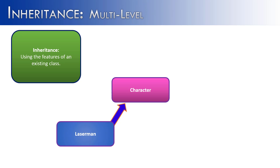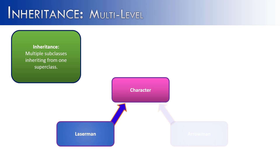Inheritance is using the features of an existing class. We have two classes here, Laserman and Character, which is a good example of inheritance. We can structure inheritance in interesting ways, and one of those ways is having multiple subclasses inheriting from one superclass. So we have both Laserman and Arrowman inheriting from the Character class — this is actually very common.